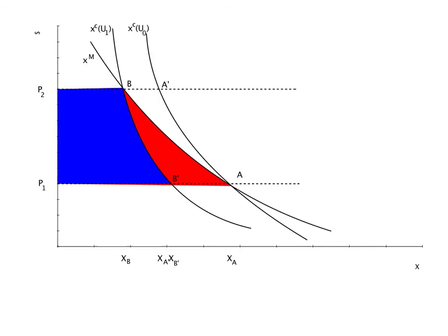It is easy to see that our usual measure of consumer surplus overstates the equivalent variation for a normal good, the area in blue.